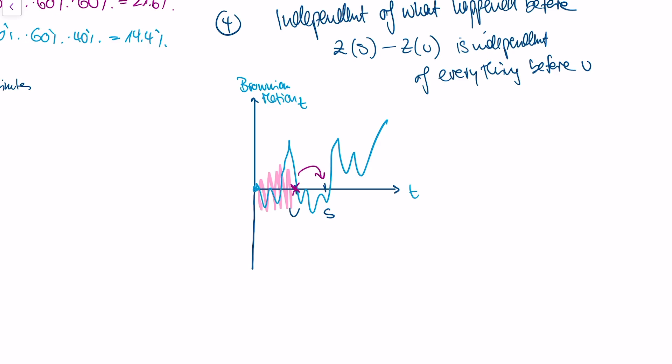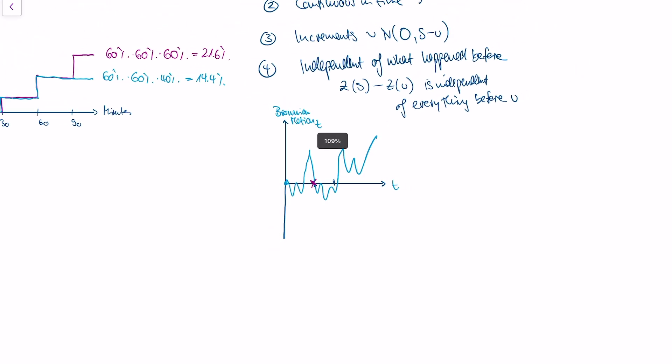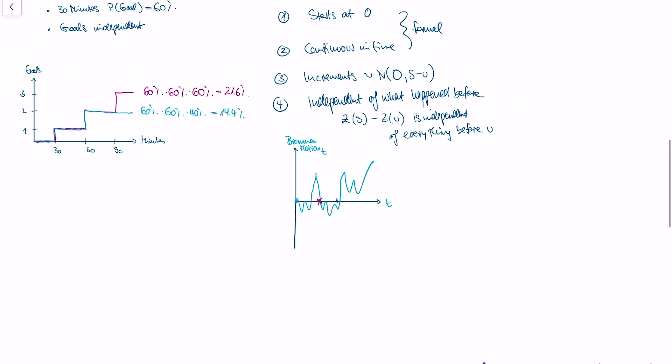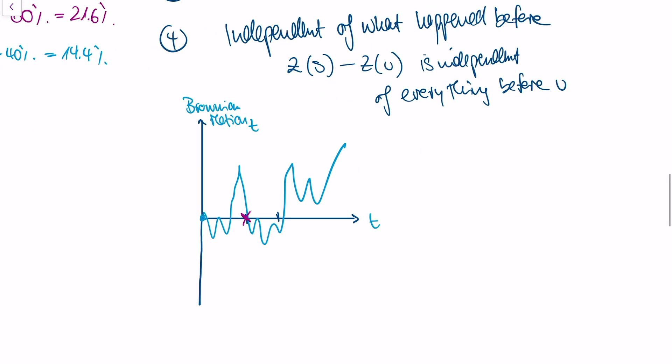One last point on Brownian motion. When you see Brownian motion, people often draw a kind of wiggly sample path. But as I've shown you with the soccer match example, this is only one representation of Brownian motion, and it has a certain probability.